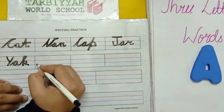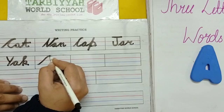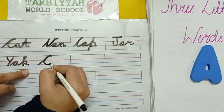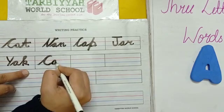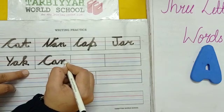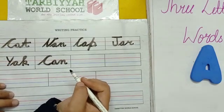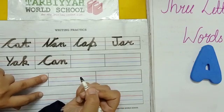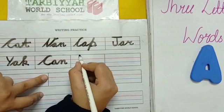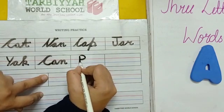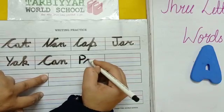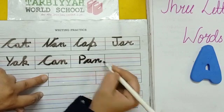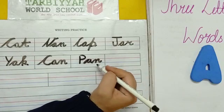Now can. We have to start from bottom to top and a slight curve from top to bottom — C. Now make A, then N — can. Now pan: make one straight line and a semi-circle for P, then a slanting line from bottom to top and a slight curve for A, then N — P-A-N, pan.